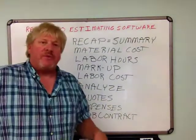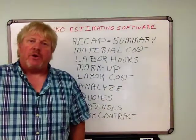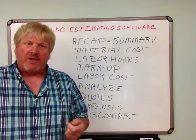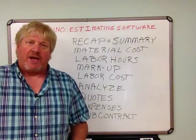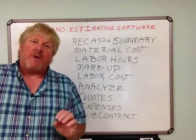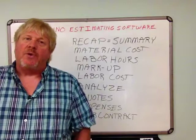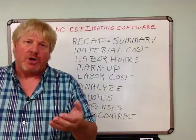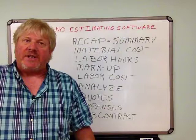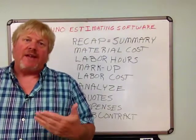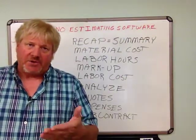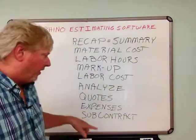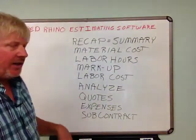Also, the recap is where you input your quoted materials — stuff like switchgear, circuit breakers, motor controllers. Red Rhino doesn't have material pricing for panels and switchgear — I'm talking about in the commercial part of it. You have to get those quoted from your wholesale house. Same with light fixtures in commercial — you must get the fixtures quoted, and you input those quotes into Rhino.